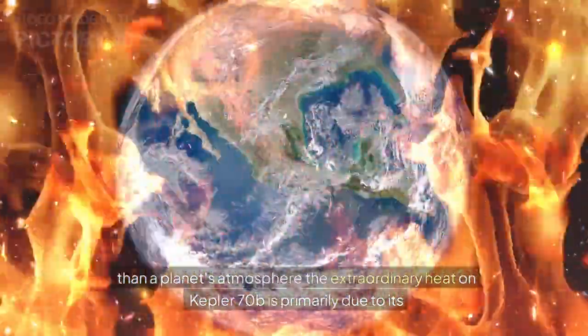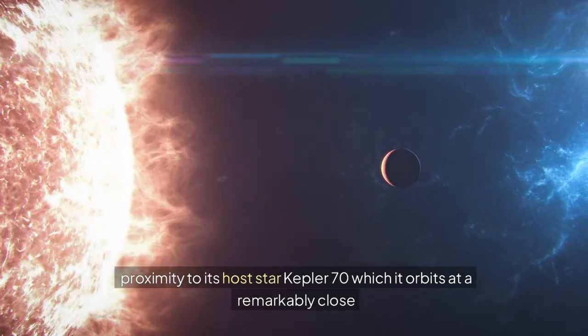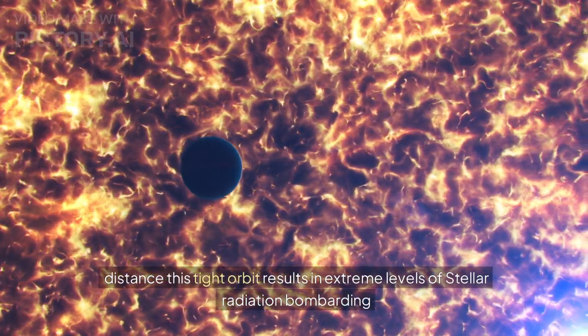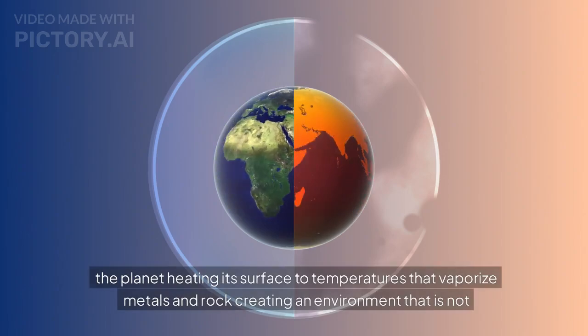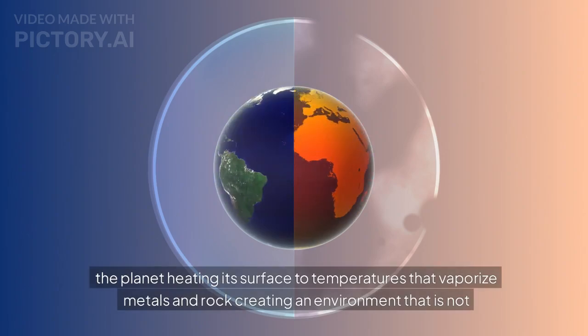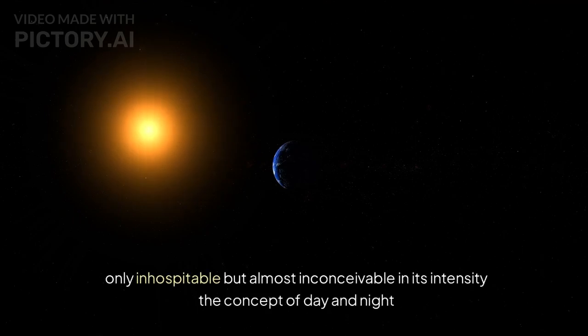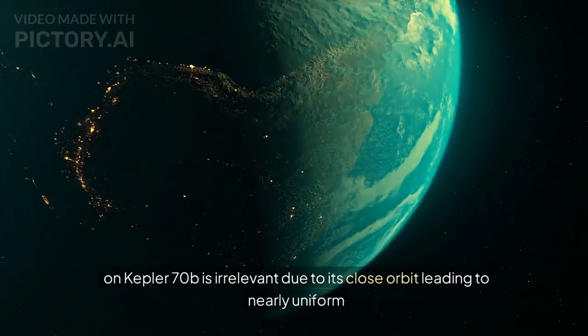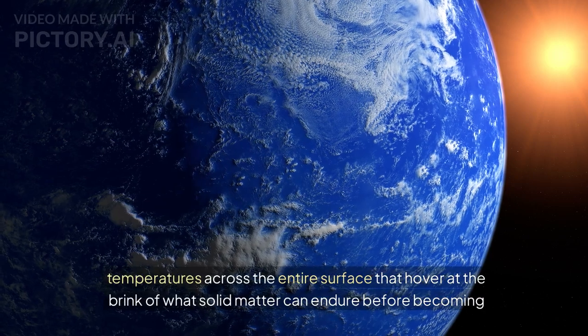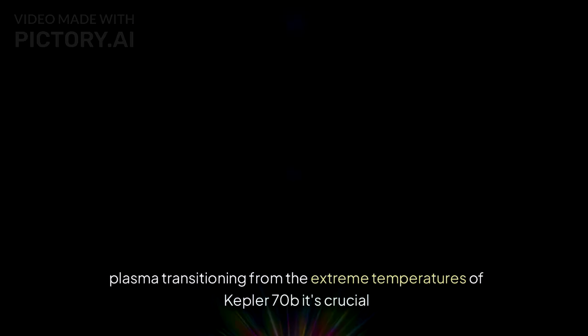The extraordinary heat on Kepler-70b is primarily due to its proximity to its host star, Kepler-70, which it orbits at a remarkably close distance. This tight orbit results in extreme levels of stellar radiation bombarding the planet, heating its surface to temperatures that vaporize metals and rock. The concept of day and night on Kepler-70b is irrelevant due to its close orbit, leading to nearly uniform temperatures across the entire surface that hover at the brink of what solid matter can endure before becoming plasma.